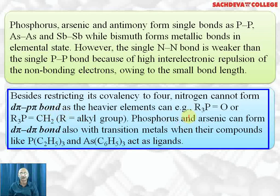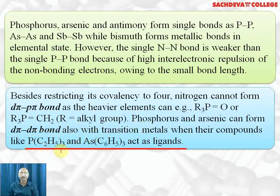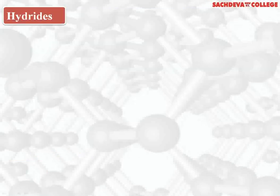Besides restricted covalency to 4, nitrogen cannot form dπ-pπ bonds because nitrogen does not have d orbitals. Phosphorus can form R₃P=O; a similar compound R₃N=O does not exist. Phosphorus can also form R₃P=CH₂. Phosphorus and arsenic can form dπ-dπ bonds with transition elements when compounds like triethylphosphine or triphenylarsene act as ligands.